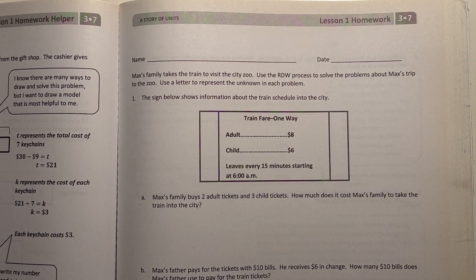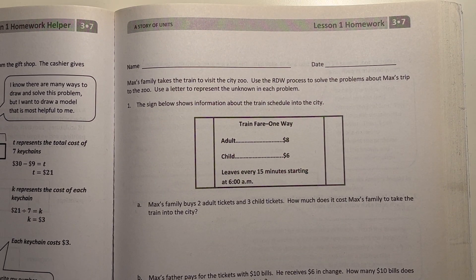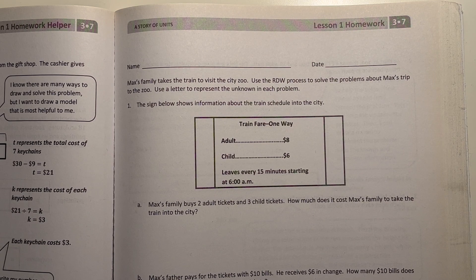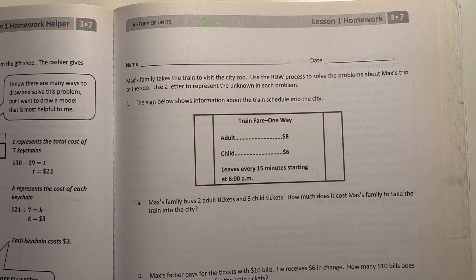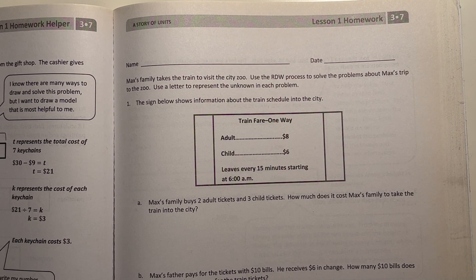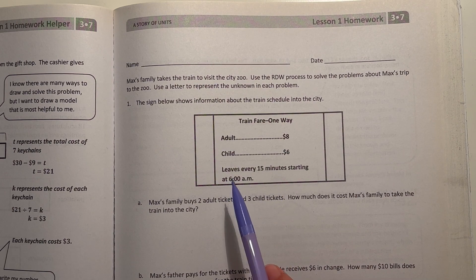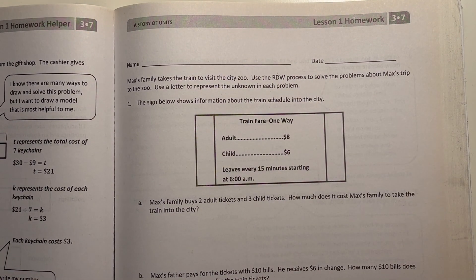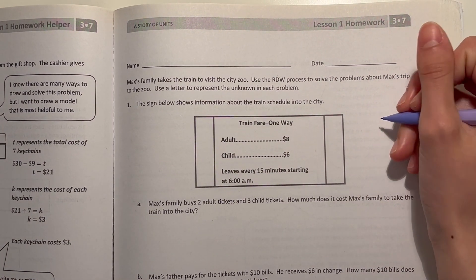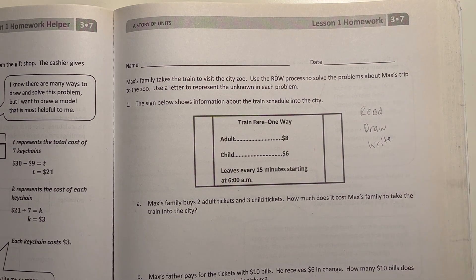Max's family takes the train to visit the city zoo. Use the RDW process to solve the problems about Max's trip to the zoo. Use a letter to represent the unknown in each problem. The sign below shows the information about the train schedule into the city. Alright, so we see here, this is the train fare. The adult ticket costs $8 and the child ticket costs $6. And the trains leave every 15 minutes starting at 6 in the morning. Alright, so when it says use the RDW process to solve, it means read, draw, write.